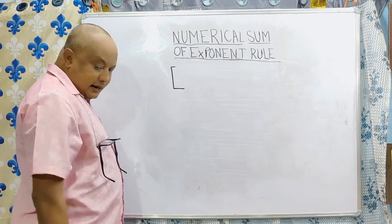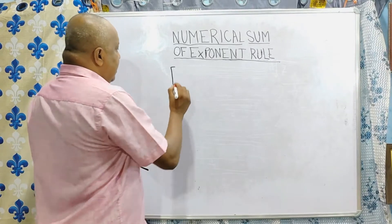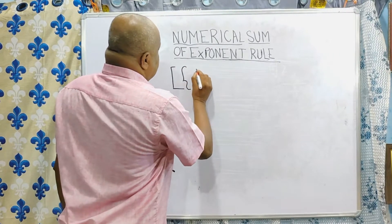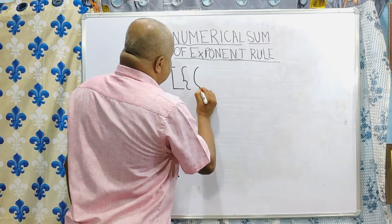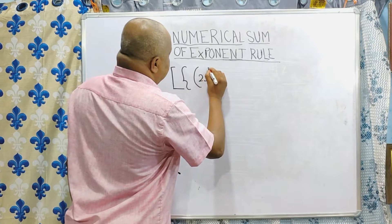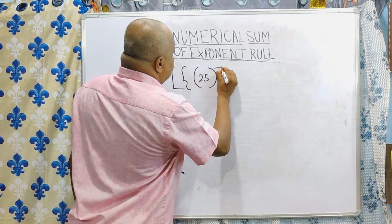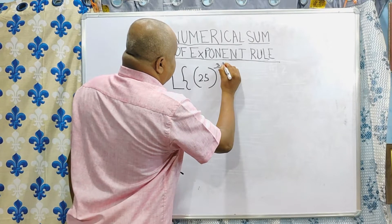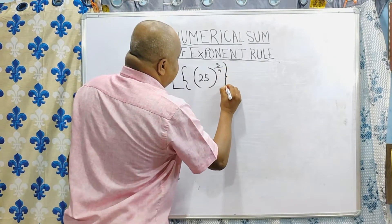Half bracket, then second bracket, then first bracket, 25 to the power 3 by 4. First bracket complete, again second bracket is also complete.